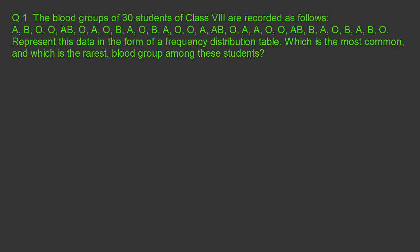Question number one: the blood groups of 30 students of Class 8 are recorded as follows. The data is given here. Represent this data in the form of a frequency distribution table, and identify which is the most common and which is the rarest blood group among these students. In a frequency distribution table, we need to put the data simply into a table. You can use tally marking if required.